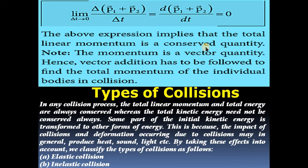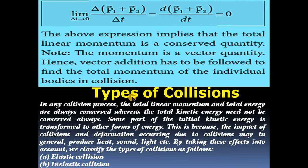The above expression implies that the total linear momentum is a conserved quantity. Note that momentum is a vector quantity, hence vector conditions have to be followed to find the total momentum of the individual bodies in collision.